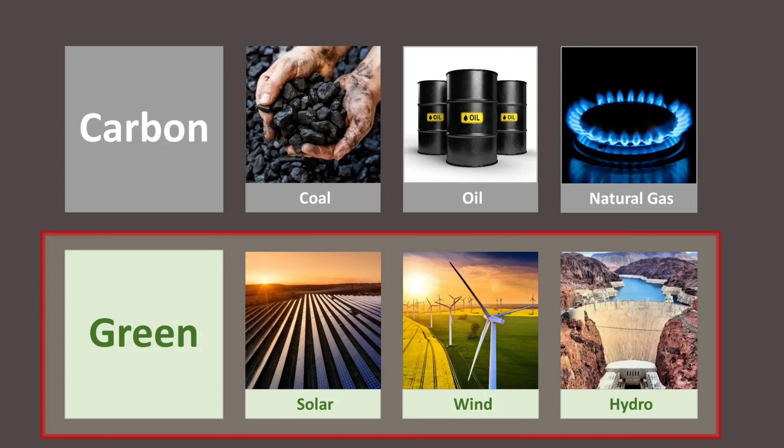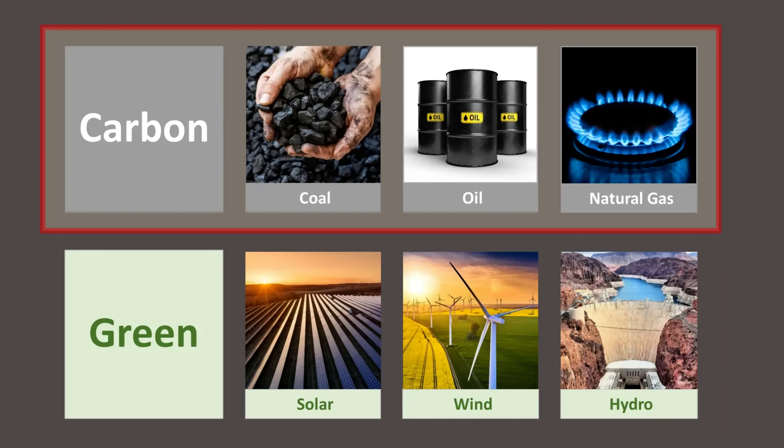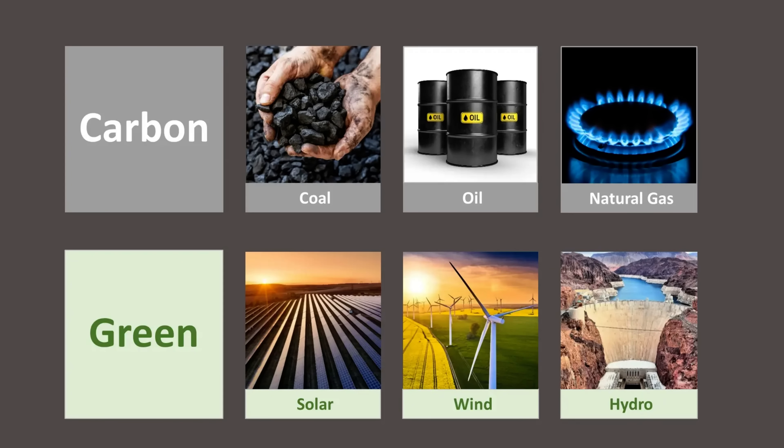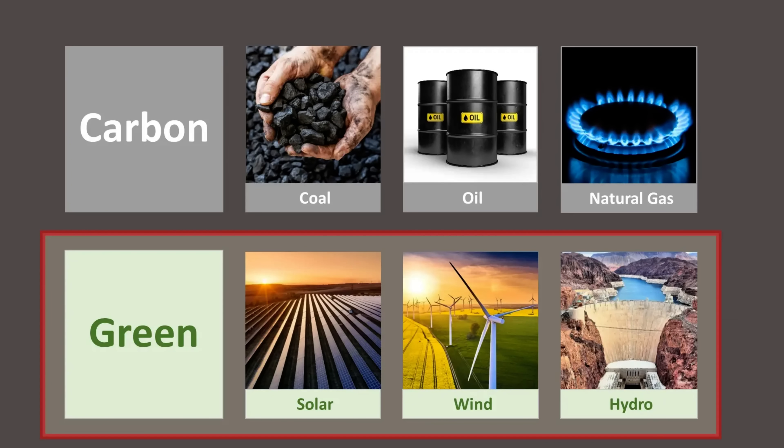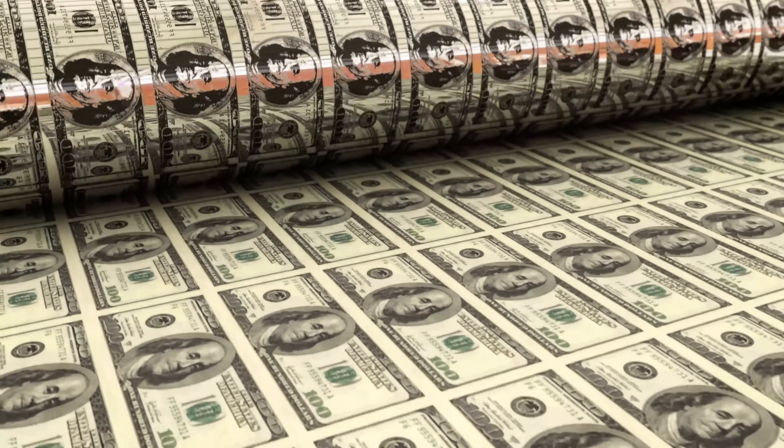In some cases, the green option costs less than the carbon-based option, while in other cases the green option costs more. When the green option costs less, decarbonization is easy and it moves forward in a natural manner. However, when the green option costs more, government intervention is often needed. This includes subsidies, taxes, and requirements.